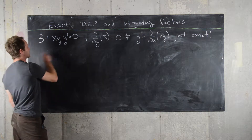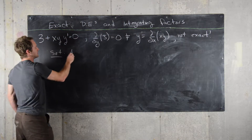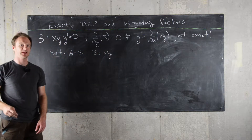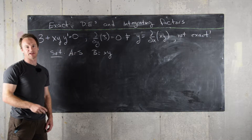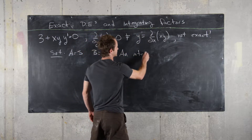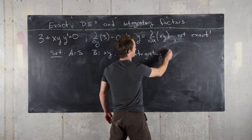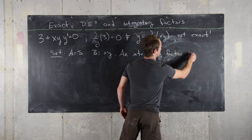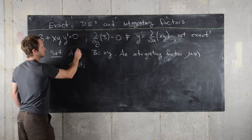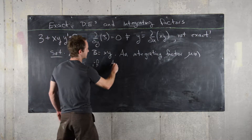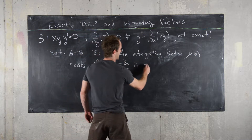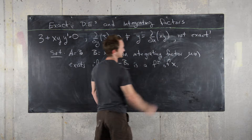The next thing we notice is: let's go ahead and set a equal to 3 and b equal to x times y. Recall that there's a test for the existence of an integrating factor — an integrating factor μ(x) exists if (a_y minus b_x) over b is a function of x alone.